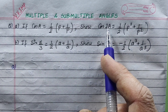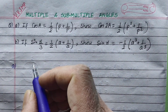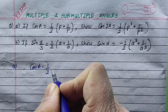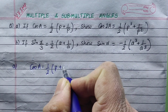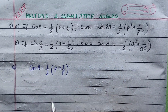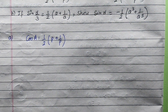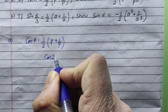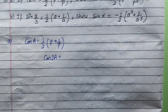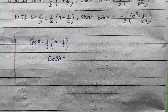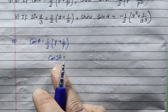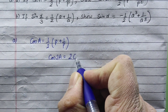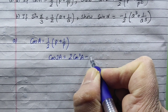If we look at the value of cos, then cos a equals half p plus 1 by p. Now we need cos 2a. We need to use the cos 2a formula. Let's look at the value: 2 cos square a minus 1.